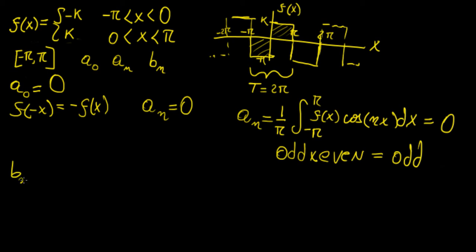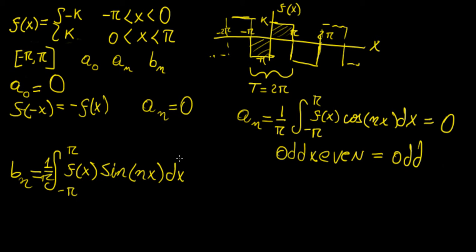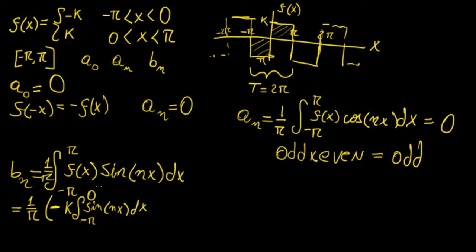That leaves us with the only non-zero Fourier coefficient, which is bₙ. We're going to have (1/π) times the integral from minus pi to pi of f(x) sine(nx) dx. Since f(x) is defined as a piecewise function we need to split this into two different integrals: minus k times integral of sine(nx) dx from minus pi to zero, plus k times integral of sine(nx) dx from zero to pi.